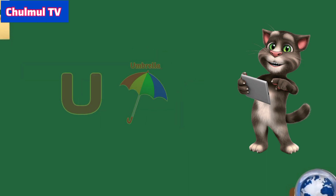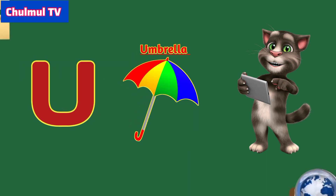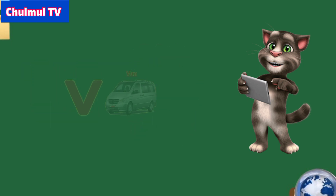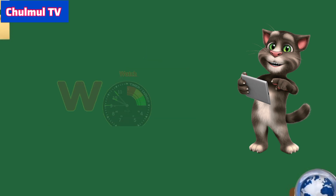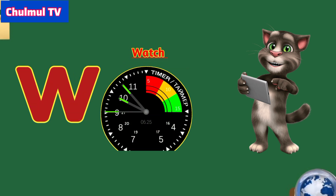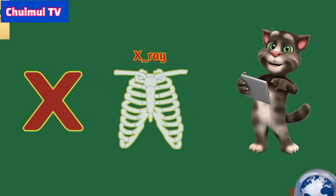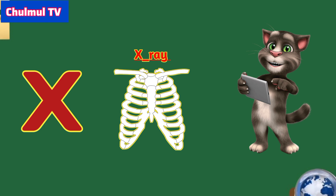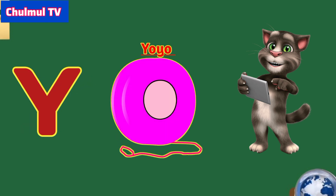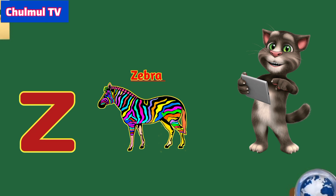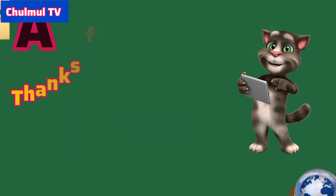U for umbrella, V for van, W for watch, X for x-ray, Y for yo-yo, Z for zebra.